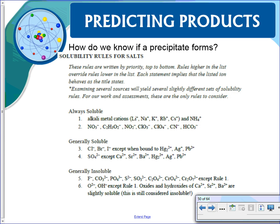So how do you know if a precipitate forms? We use solubility rules — look at your reference sheet, which you'll also have on tests and quizzes. These rules are written by priority, top to bottom; the higher rule takes precedence just like the activity series. Alkali metals (Group 1) and ammonium are always soluble, as are nitrates.